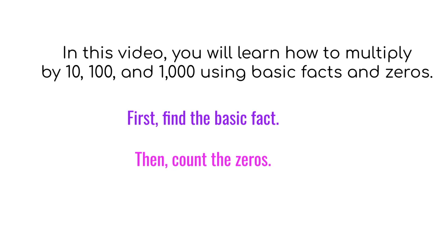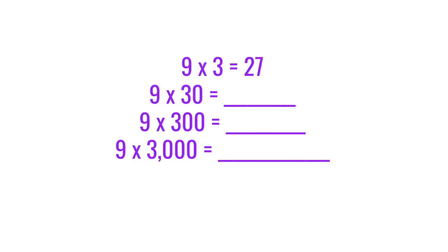First, find the basic fact, then count the zeros. Here is an example of how to use basic facts and zeros to multiply by 10, 100, and 1,000.